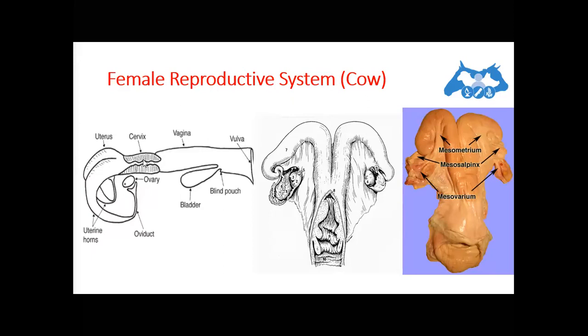But the sow has a similar ridges but they are arranged as interdigitated pads. The cervix plays an important role in sperm transport and maintenance of pregnancy and parturition. So this portion of the reproductive female reproductive tract is very important while maintaining the pregnancy and parturition and the sperm transport.